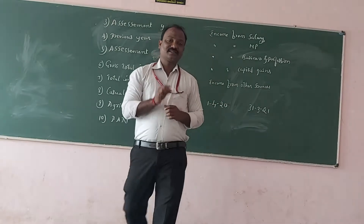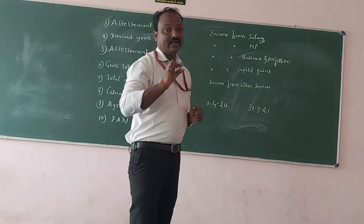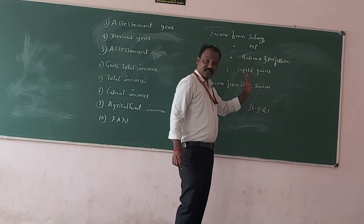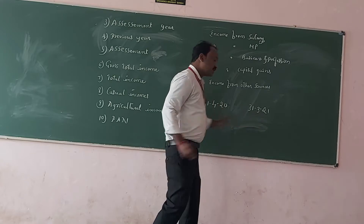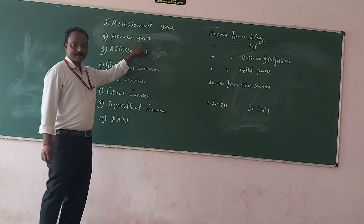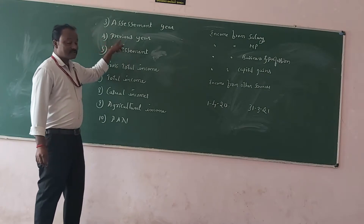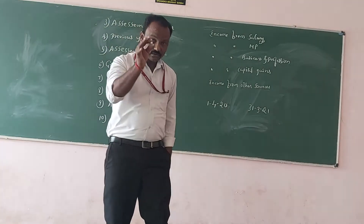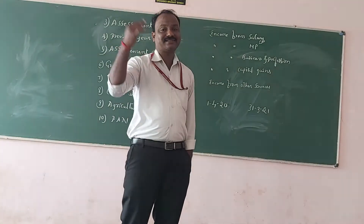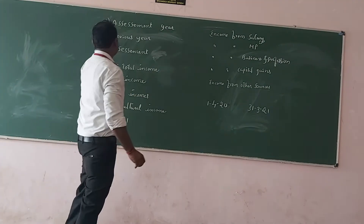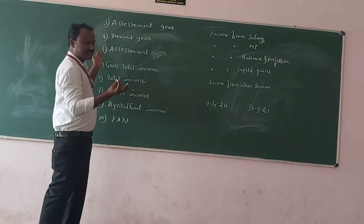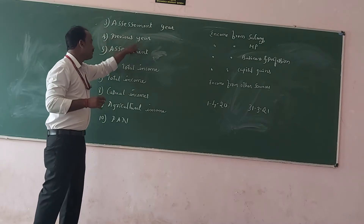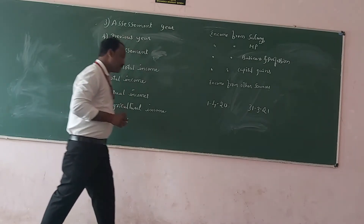Assessment year is the year in which we are presently, which begins on 1st April and ends on 31st March. Now, the previous year — this is also most important. Previous year is also a duration of 12 months. The difference between previous year and assessment year is quite simple: whatever the financial year is before the assessment year, that is called the previous year.